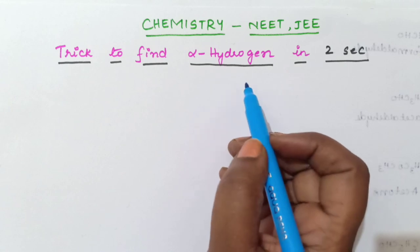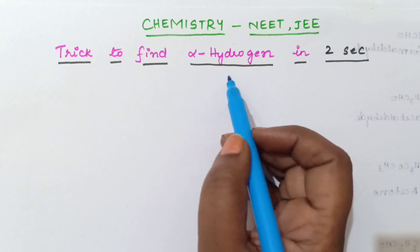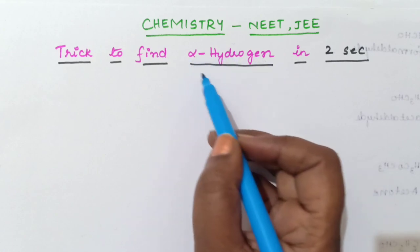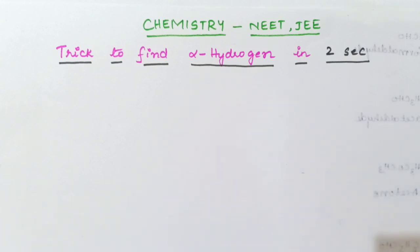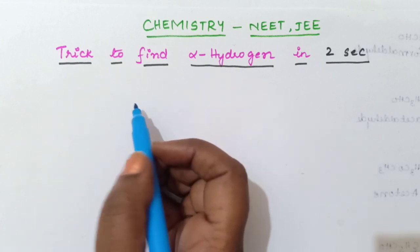Aldol condensation will not take place if alpha hydrogen atom is absent in that molecule, so you should learn about alpha hydrogen atom. If you are new to our channel, subscribe and share this video with your friends. This channel has useful chemistry videos for NEET examination preparation. So let us start — what is this alpha hydrogen atom? Let us take one example and try to understand.